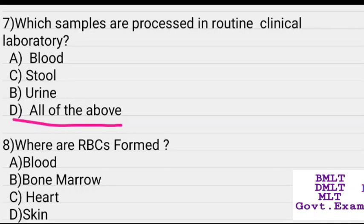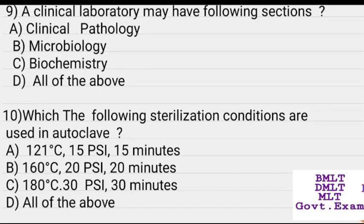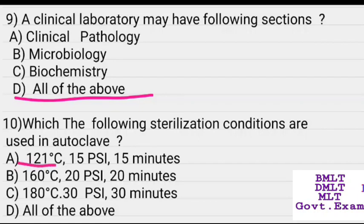Where are RBCs produced? Options: Heart, skin, bone marrow. Answer: Bone marrow.